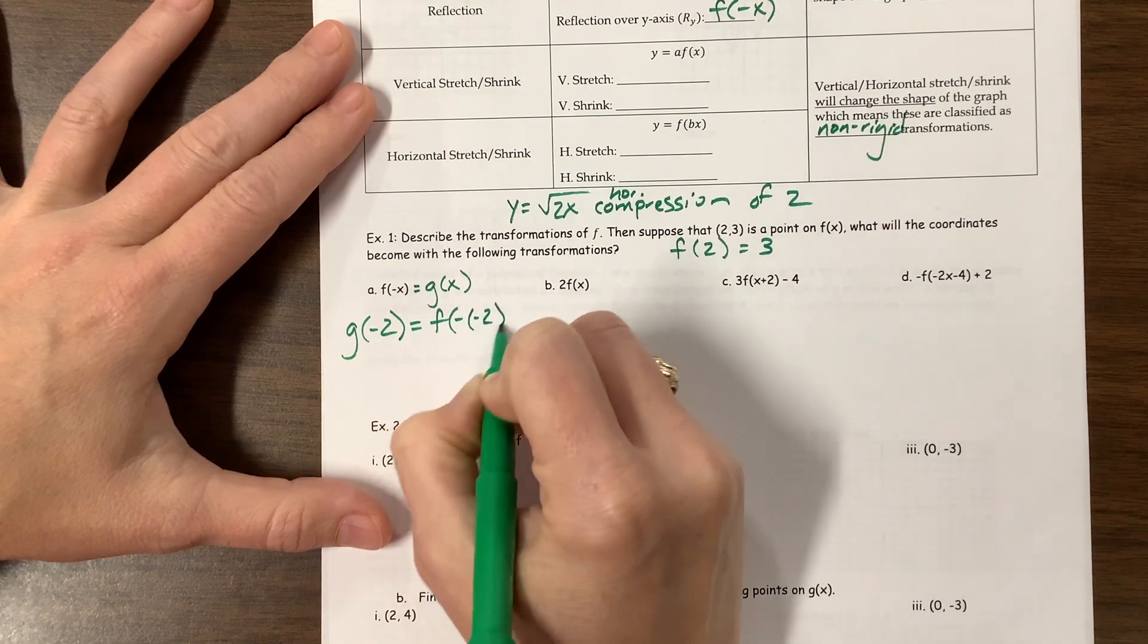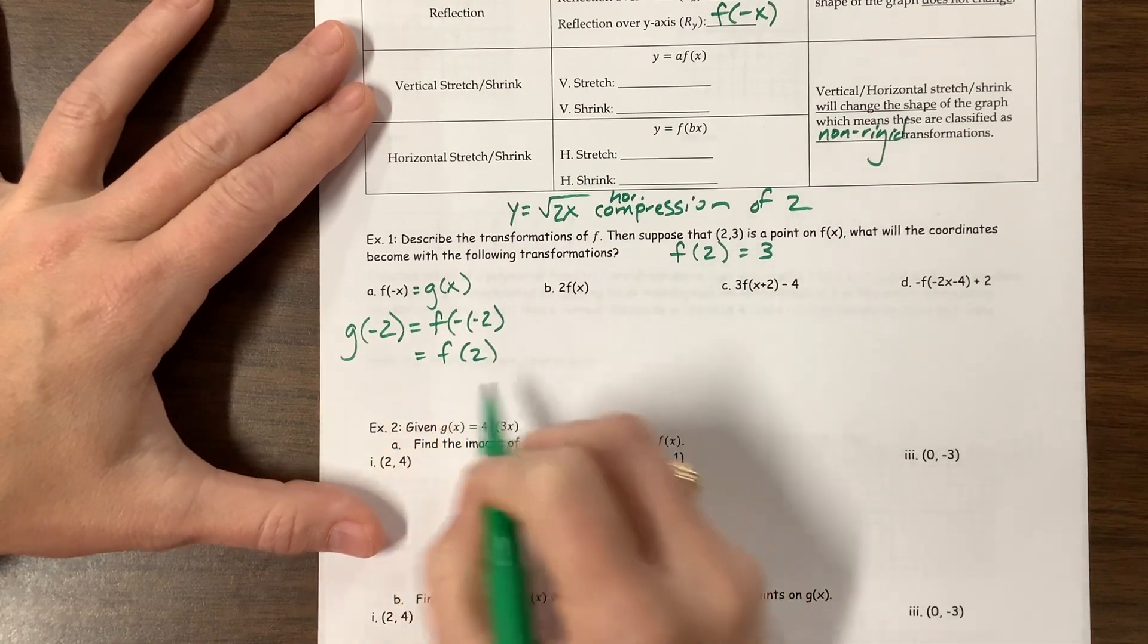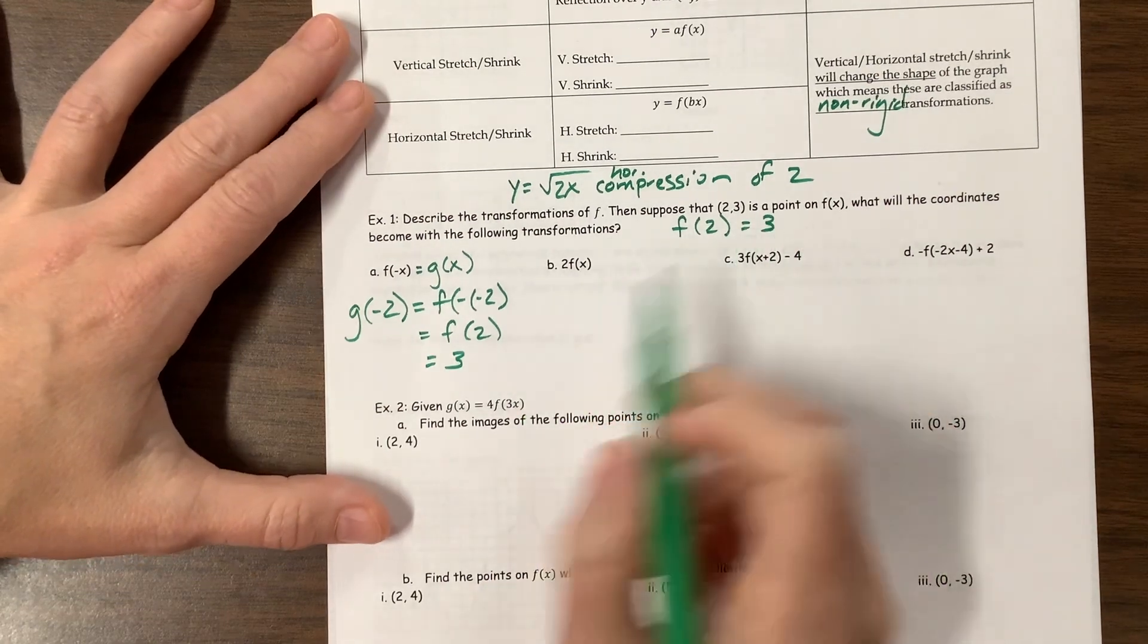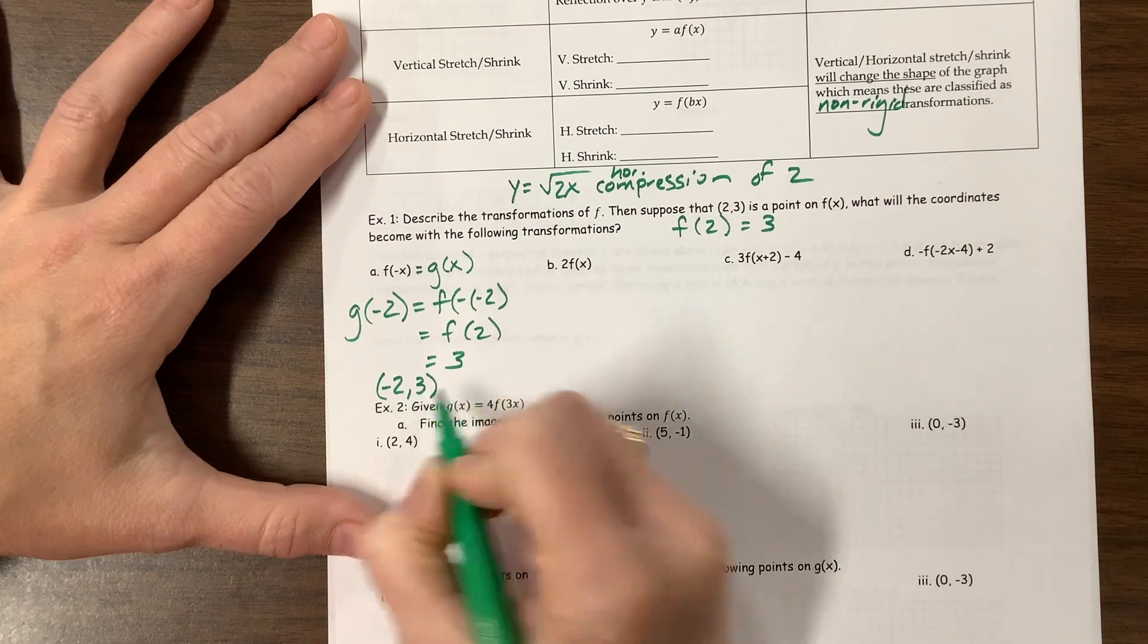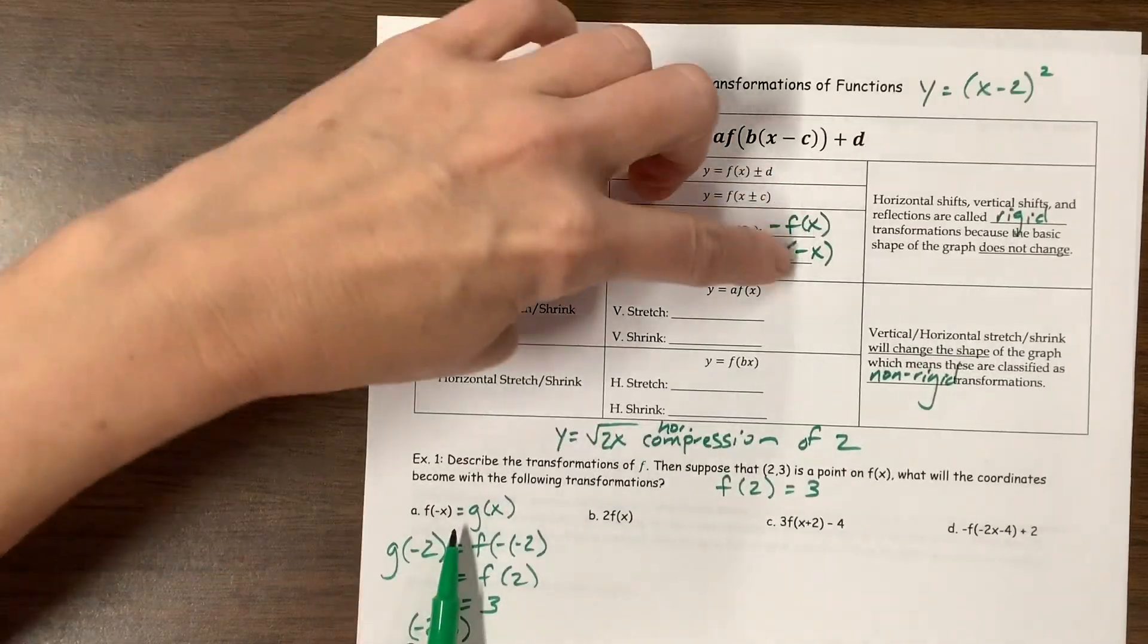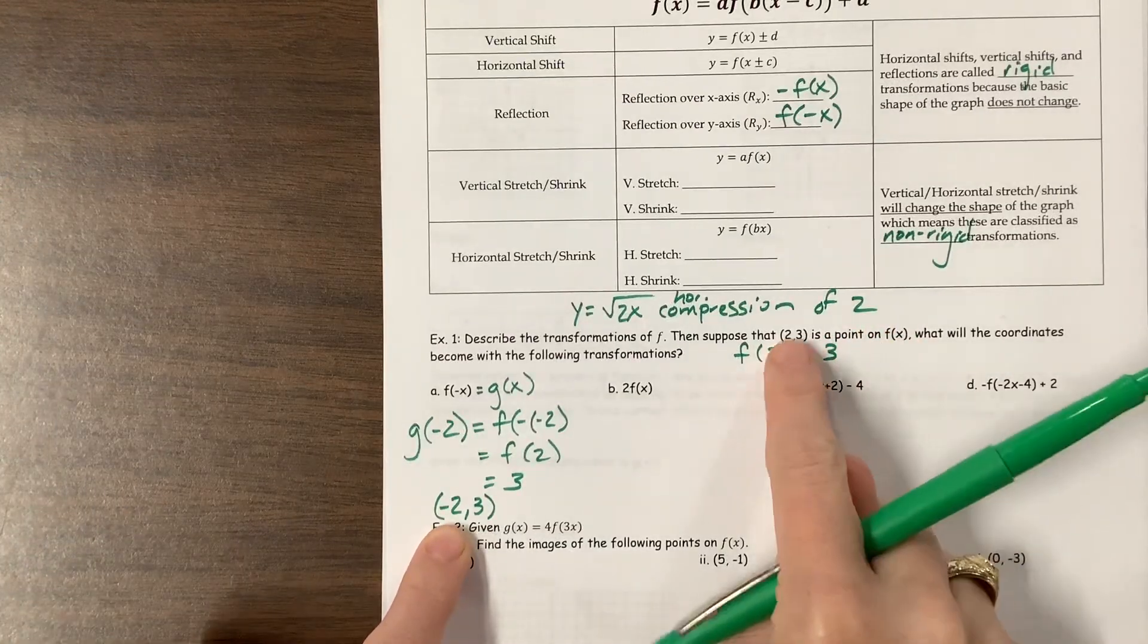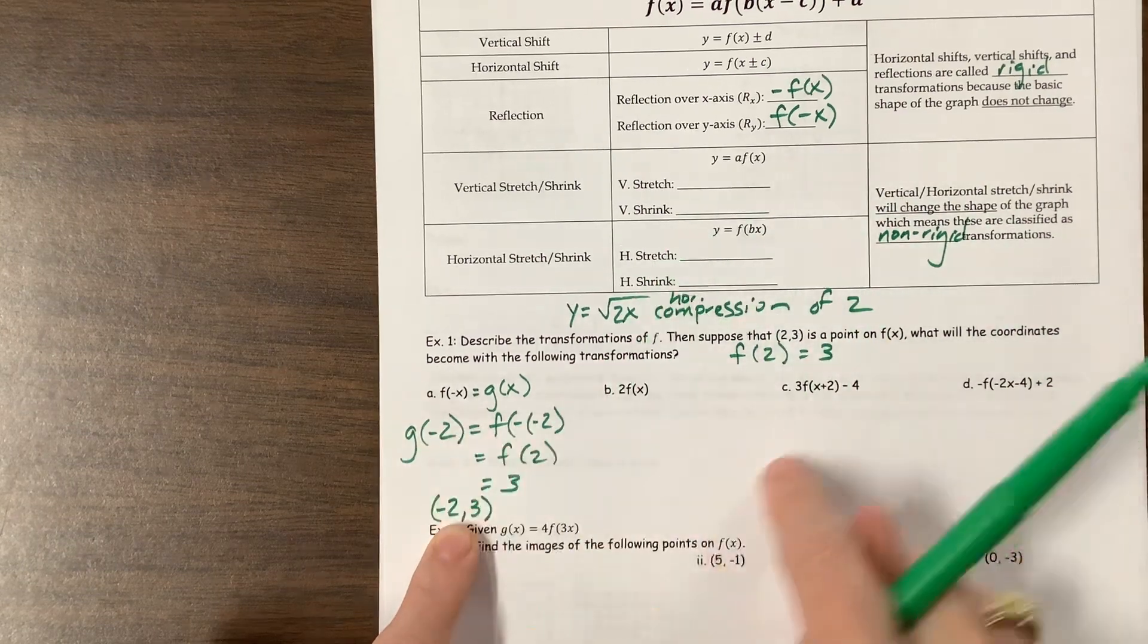Okay, so the way I like to think about these is we're going to say that this is equal to g of x. But the only thing I know about f, the only thing I know in the whole wide world is that f of 2 is equal to 3. That's all I know. I have no idea what type of equation this is. So now they're saying, well, we need to figure out what the coordinates would be for g. So I need to figure out what the x value is for g that corresponds to this. These are kind of confusing. Basically, I need a new x where when I plug it into this equation, I get a positive 2.